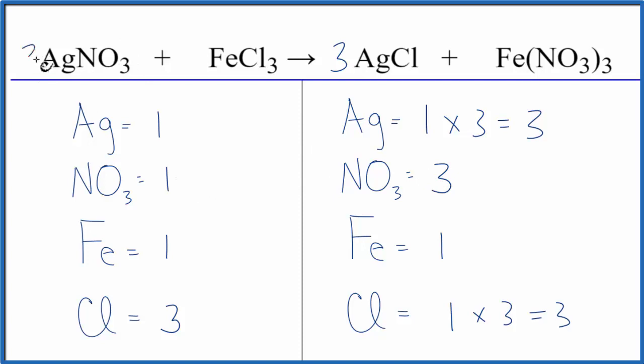And then the nitrates, one nitrate and three here. So all I have to do is put a coefficient of three in front of the AgNO3. One times three. That balances the silvers. We have one nitrate times the three. That balances the nitrate.